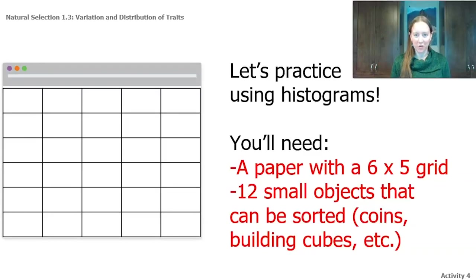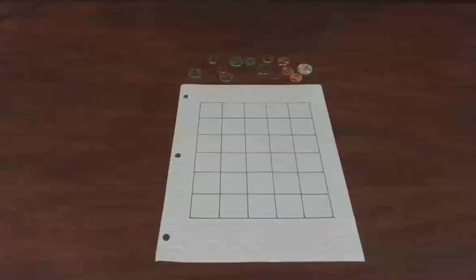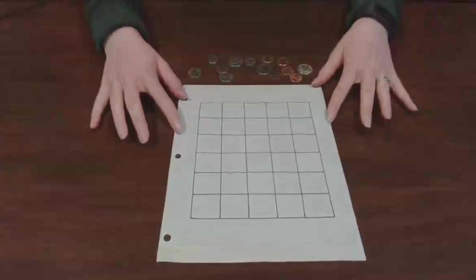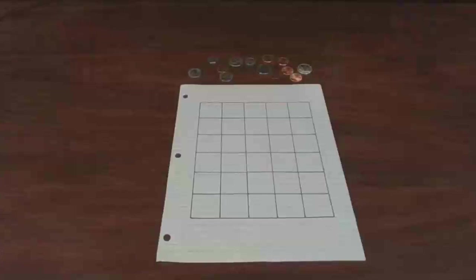Let's practice making some histograms. For this you'll need a piece of paper with a grid and 12 small objects that you can sort — coins, Legos, building cubes, anything with variation in your materials. I grabbed 12 random coins and made a grid on paper. Whatever materials you have works great.